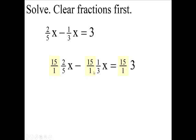Now, 5 goes into 15—15 and 5 can both be divided by 5. 15 divided by 5 is 3, and 5 divided by 5 is 1. Now we're going to look at the 15 and the 3.